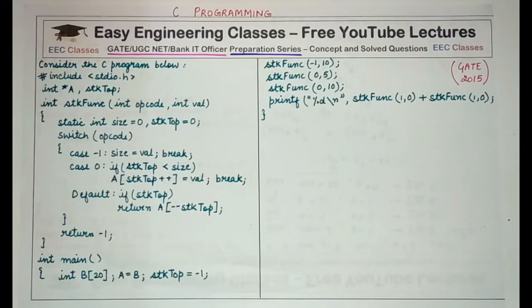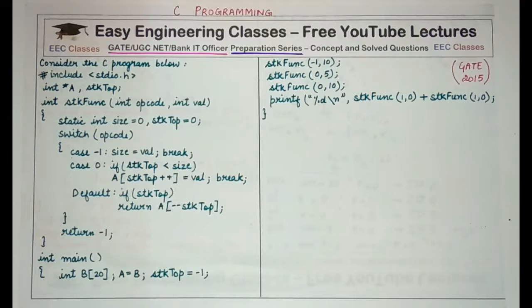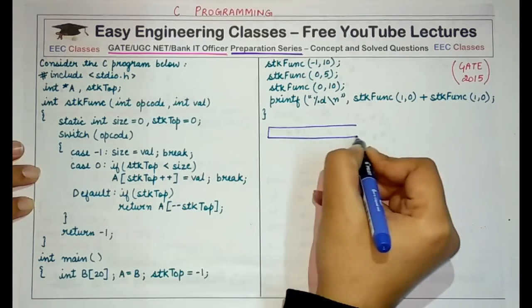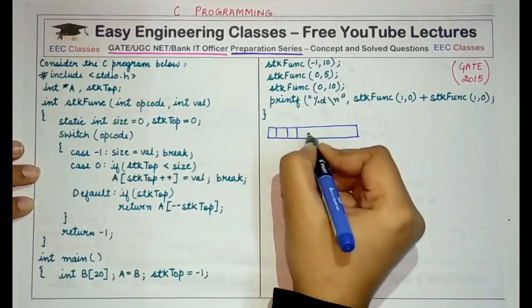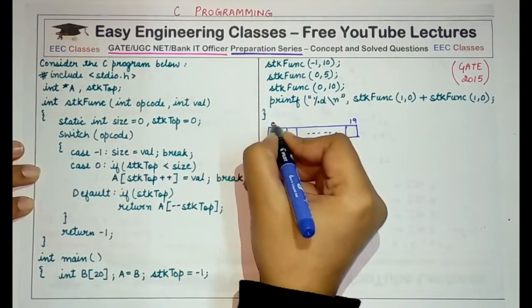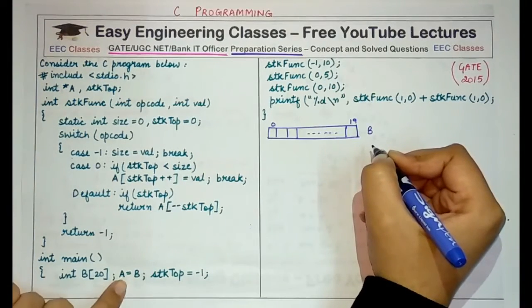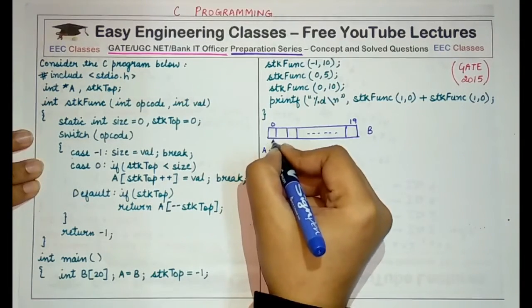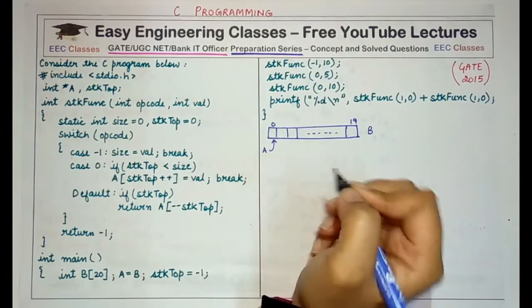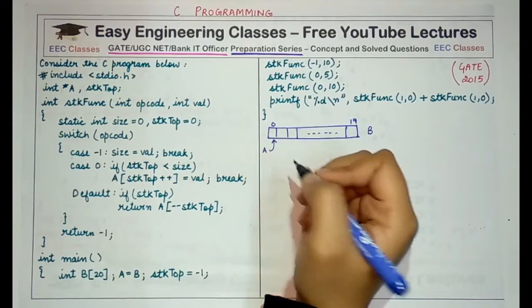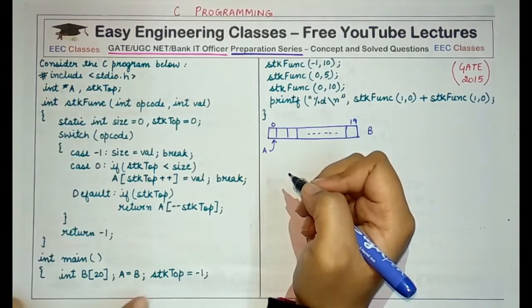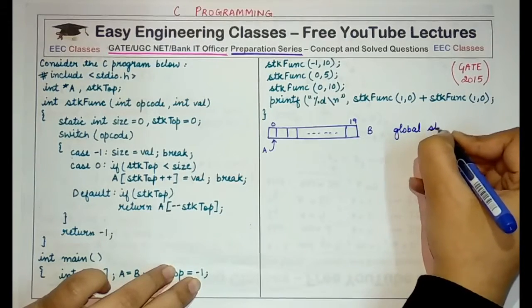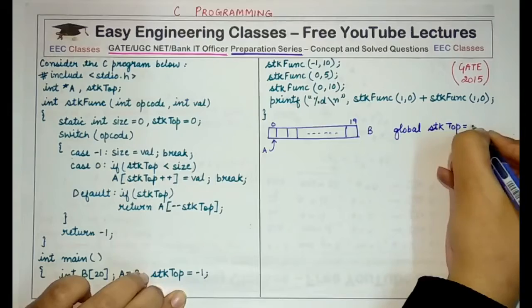Starting with the main function: it declares an array b of size 20, with locations indexed 0 to 19. The global pointer 'a' is assigned b, so 'a' points to the starting location of b at index 0. The global variable stack_top (stk_top) is initialized to -1.